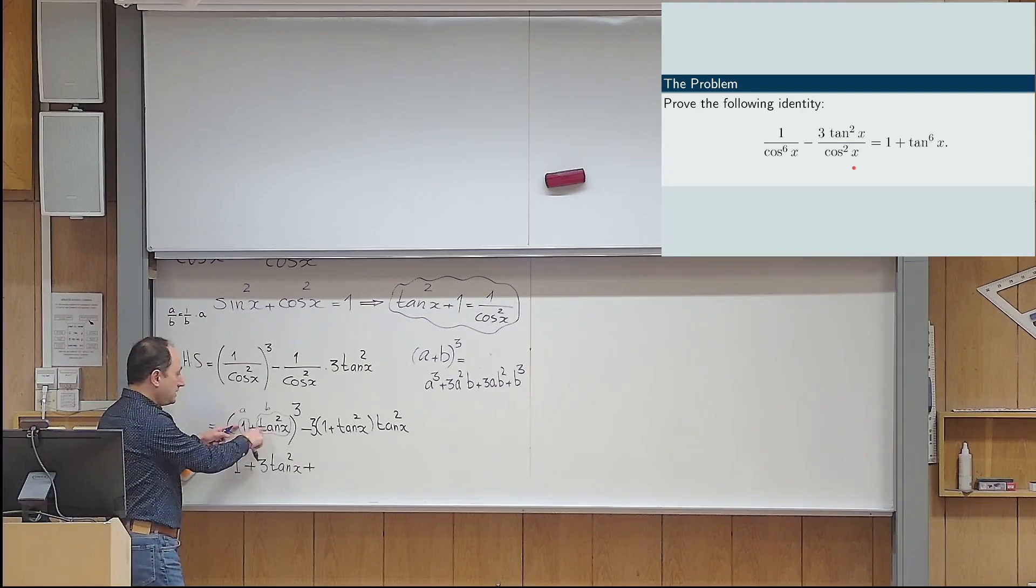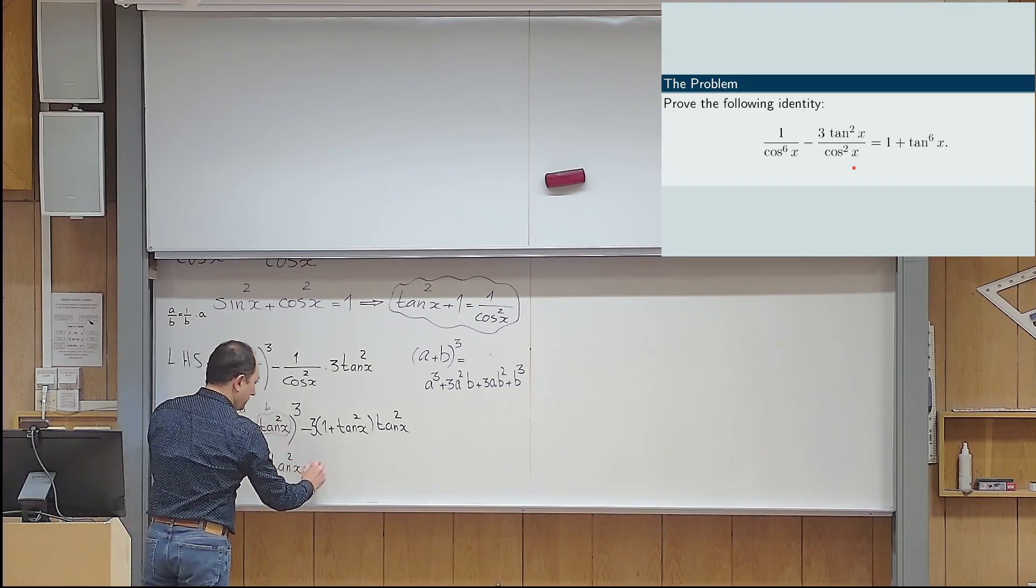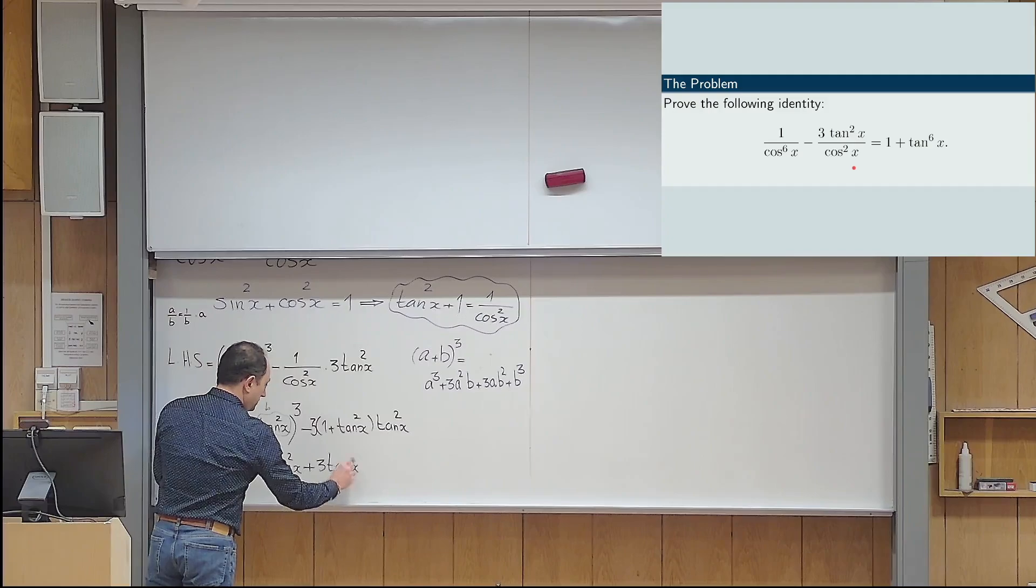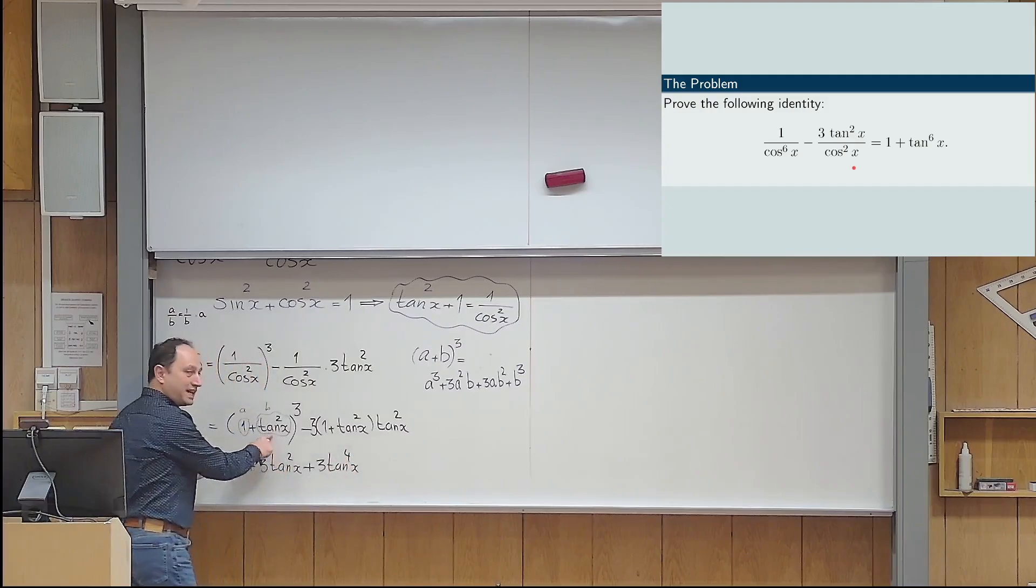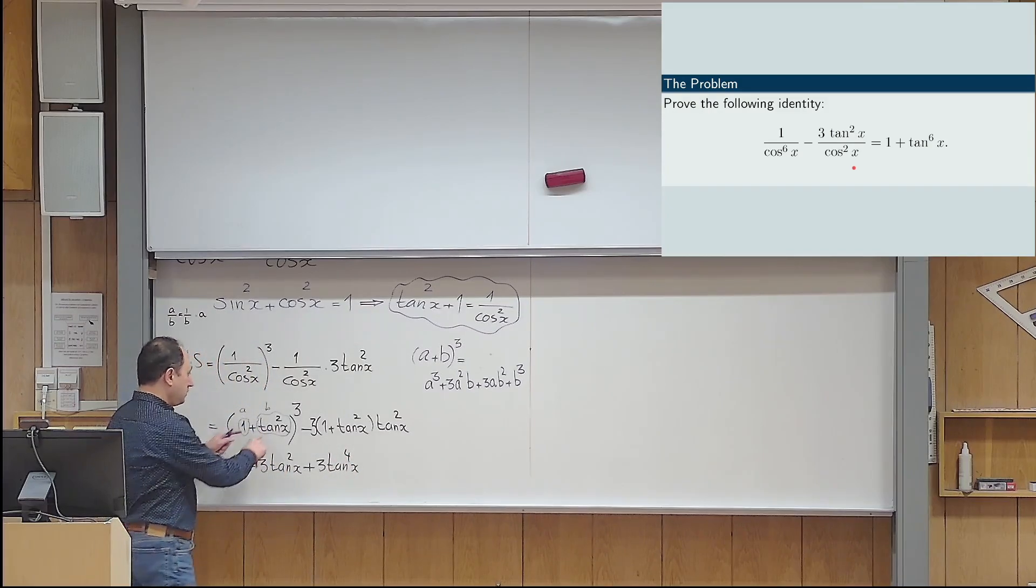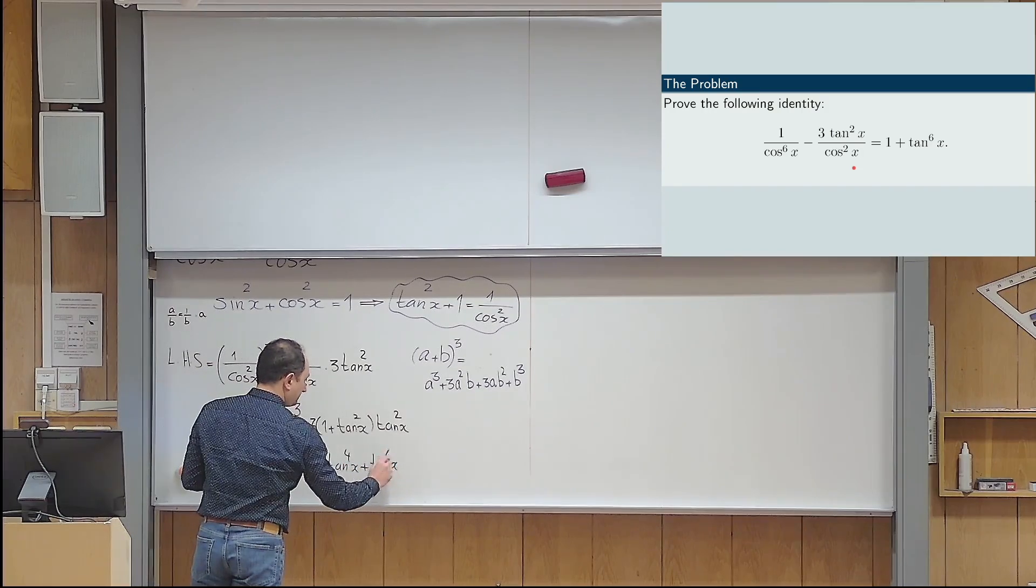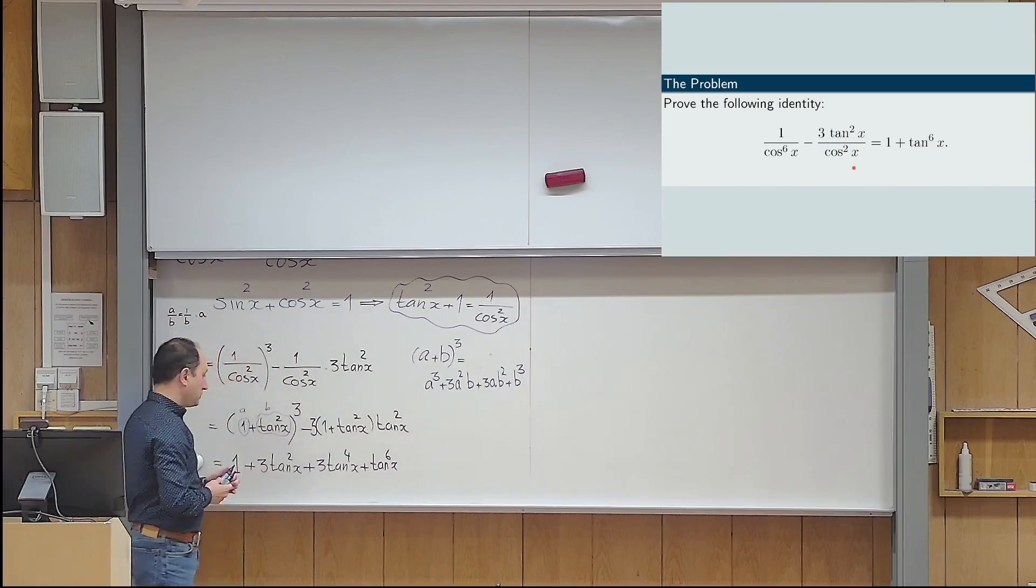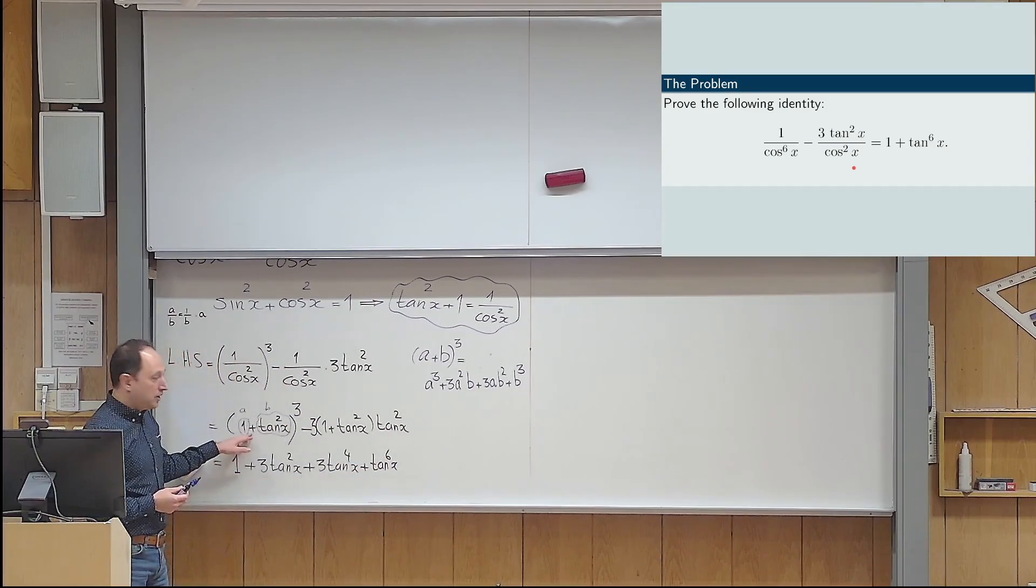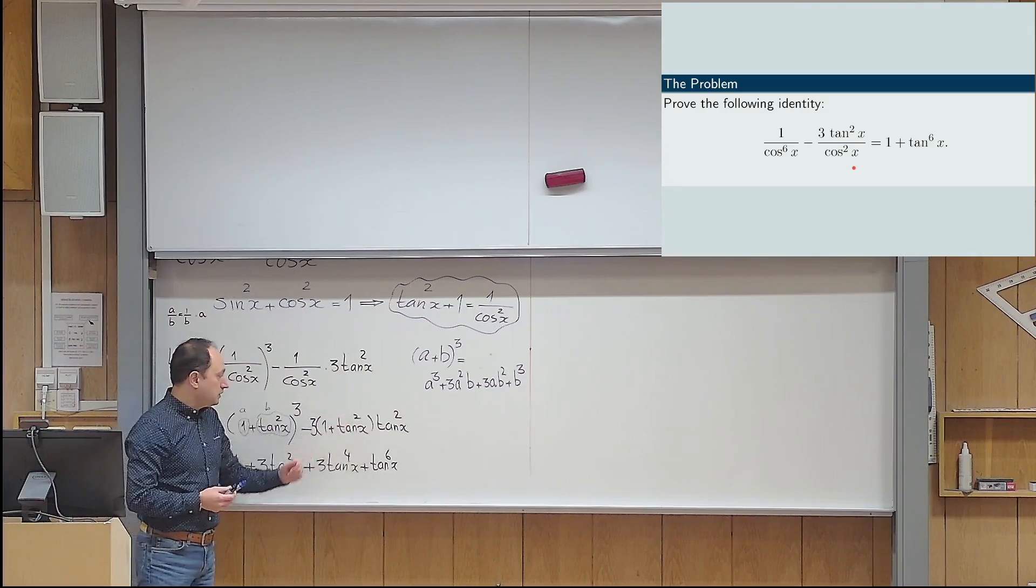So, this becomes 3 times tan x to the power of 4. And finally, the last one to the power of 3, which gives me tan x to the power of 6. This is the expansion of the first part. And then I expand that one as well.